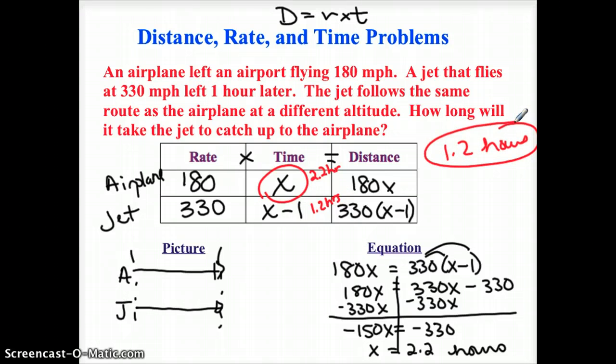Okay. And it's always really smart to double check. Like, if the jet goes for 1.2 hours at 330 miles per hour, 1.2 times 330, it's gone 396 miles. And I want to know if that's how long the airplane's going to go in 2.2 hours. So if I do 180 times 2.2, I'm going to get 396 miles. And they match, so that's a good sign. Okay. So 1.2 hours looks to be the correct answer.